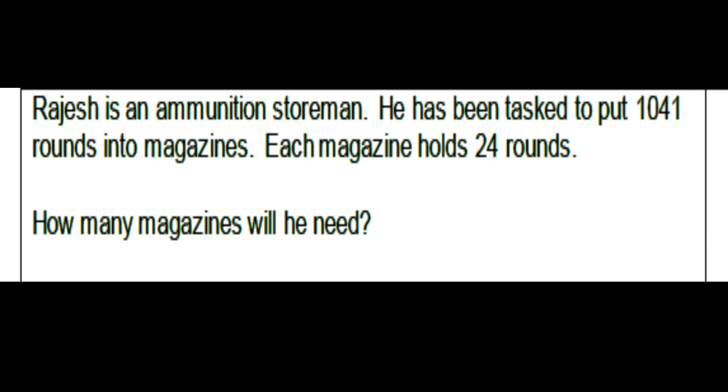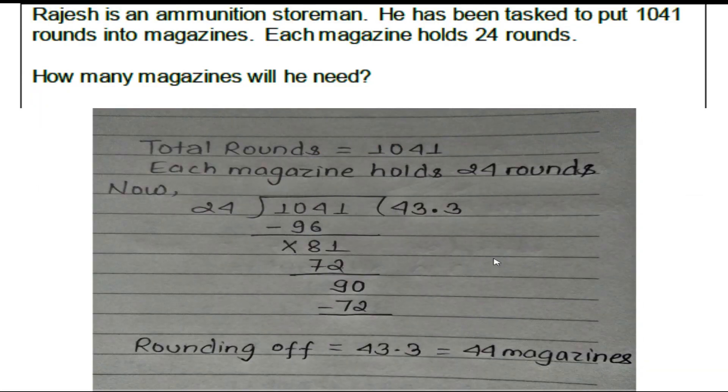Rajesh is an ammunition storeman. He has been tasked to put 1041 rounds into magazines. Each magazine holds 24 rounds. How many magazines will he need? Total rounds are 1041, each magazine holds 24 rounds.